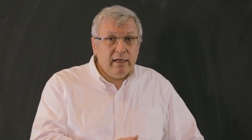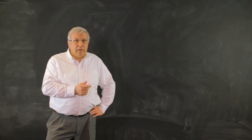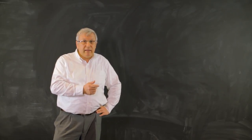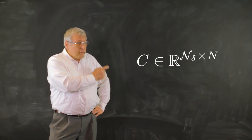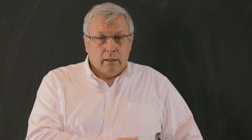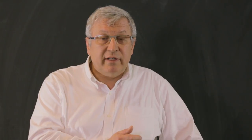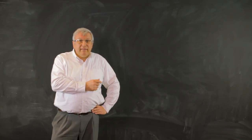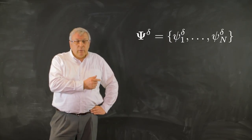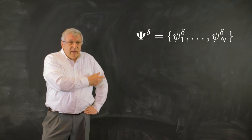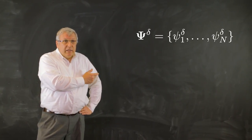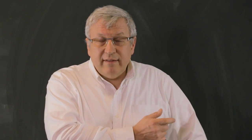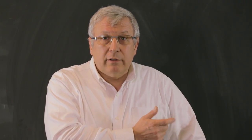The set of all coefficients c_{μj} is stored in a rectangular matrix C. In the general setting, the matrix C has complex coefficients, but here, with no external magnetic field, we can assume it has real coefficients, so C belongs to ℝ^{N_δ × N}. Note that in general the basis functions χ_μ are not orthonormal, but in some cases they can be. Given any set of discrete orbitals ψ₁^δ, ψ₂^δ, …, ψₙ^δ, we can build the corresponding Slater determinant, which is the discrete counterpart of the wave function.